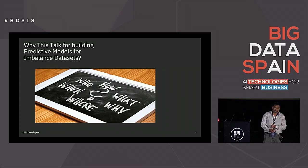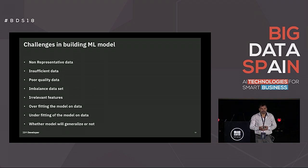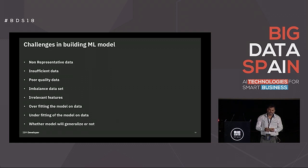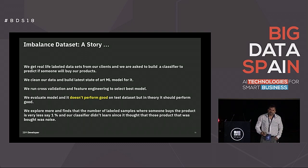Let's go into the meat of this presentation. There are many challenges we face in building a machine learning model. Somebody else may collect our data set — they may not collect all details, the data may be corrupted, or there may be insufficient information. People sometimes add extra features just to be careful, resulting in many irrelevant columns. We'll also see how to handle the standard problem of overfitting and underfitting.